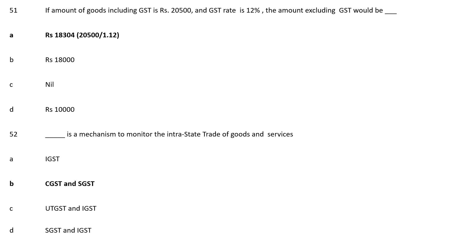Next question, Question No. 52. Dash is a mechanism to monitor the intrastate trade of goods and services. Option A: IGST; Option B: CGST and SGST; Option C: UTGST and ISD; Option D: SGST and IGST. The correct answer is Option B, CGST and SGST. CGST and SGST is a mechanism to monitor the intrastate trade of goods and services.